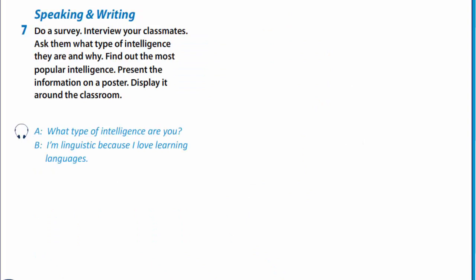In exercise 7, you are to do a survey. Interview your classmates. Ask them what type of intelligence they are and why. Find out the most popular intelligence. You are to present the information on a poster. Let's listen to the example. What type of intelligence are you? I'm linguistic because I love learning languages.